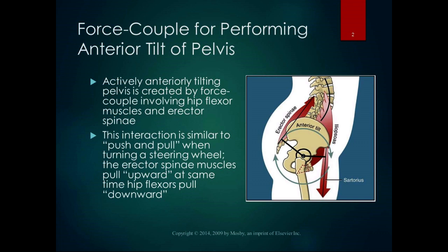The active anterior tilting of the pelvis is created by a force couple involving the hip flexor muscles and the extensor muscles of the low back, specifically the erector spinae. The hip flexors pull inferiorly on the anterior portion of the pelvis, and the erector spinae pulls superiorly on the posterior portion. It's like turning a steering wheel, where one hand pulls upward as the other pulls downward, to create that anterior tilt.